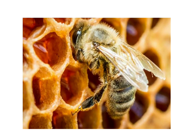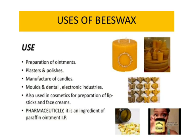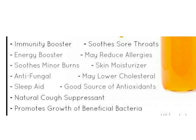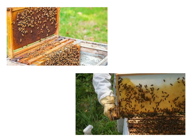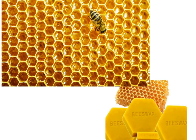Honeybees are beneficial to human beings. They are reared for honey and also for beeswax. Beeswax is secreted from the glands of honeybees and deposited on the honeycomb. Beeswax is used in cosmetics like lip balms, lip gloss, and skin creams. The place where bees are reared to get commercial products is known as an apiary — a place where beehives are kept. Bees are reared on artificial beehives that have frames on which they can build their honeycombs. The walls of these honeycombs are made of wax secreted by the bees themselves.